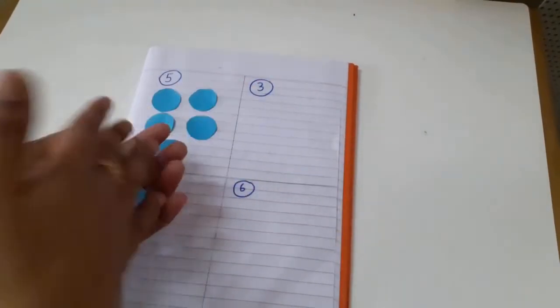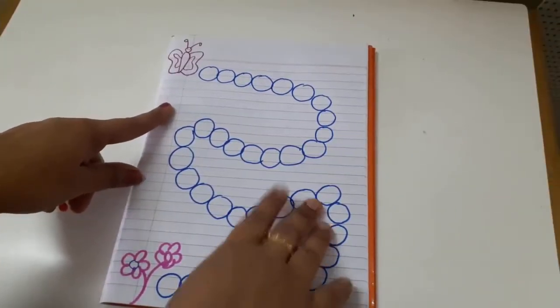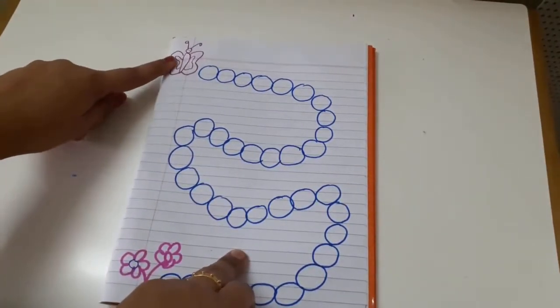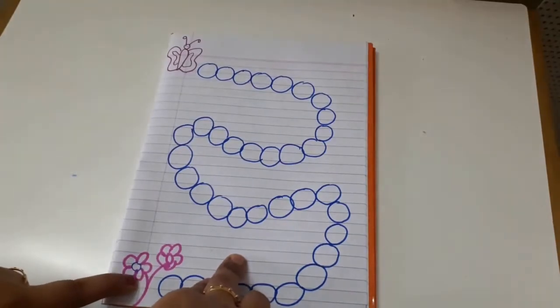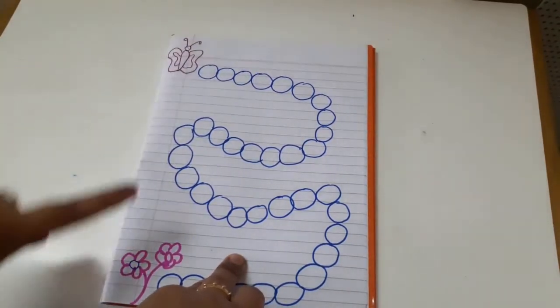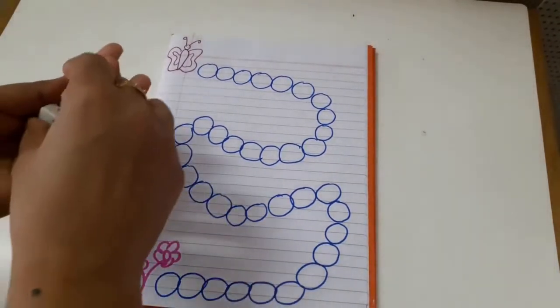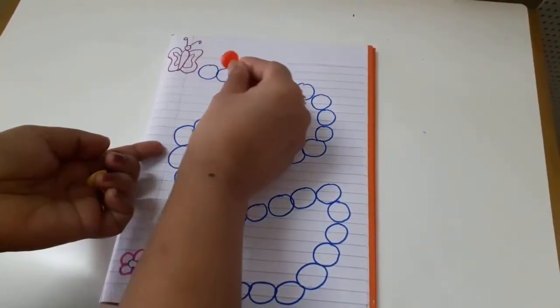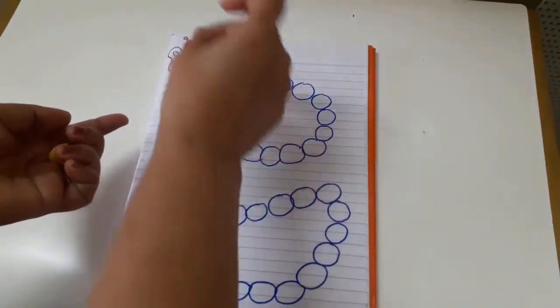The next game is a very familiar one. Here I have drawn a butterfly on one side and a flower on the other side. This is the start and this is the end. What they have to do is roll the dice and whatever number comes, they have to keep on moving from here to here.